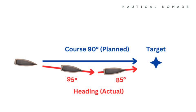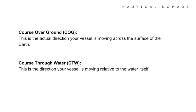Heading is slightly different — it's the direction your vessel is actually pointing at any given moment, which can be affected by wind, waves, or currents. Course over ground, or COG, is the actual direction your vessel is moving across the surface of the earth, as influenced by external forces like wind and tides. Navigational tools like GPS show your COG, making it essential for ensuring you're heading towards your destination even when currents or winds push you off course.